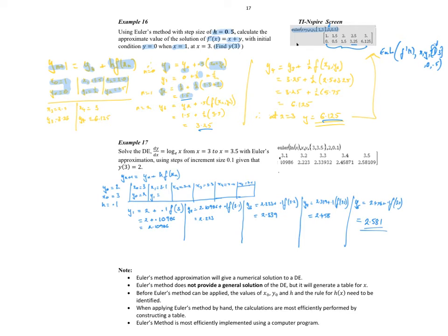Let's look at another one. We have a derivative dy/dx equals natural log of x. We're interested from x equal to 3 to 3.5 using step size of 0.1, which is typically the step size we use, and we know that at x equal to 3, y is equal to 2.